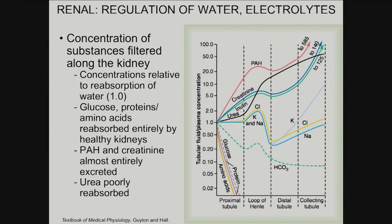The first thing you notice is that protein, glucose, and amino acids are kept — their concentration plummets to zero in the tubular fluid, what's going to become the urine, very early in the process of passing through the kidney. This is really important — they're very valuable and routinely retained. Except in disease states: if the kidney's not working well, you can see protein loss, foamy urine — many kidney diseases cause that. Of course, in diabetes, if blood sugar gets too high, you get sugar in the urine.